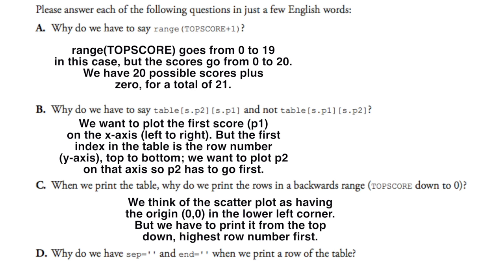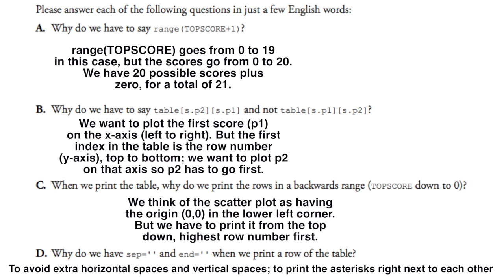And finally, part D: Why do we have sep and end when we print the row of the table? And this is, like I said before, to avoid extra horizontal spaces and vertical spaces, to print the asterisks right next to each other. Otherwise it'll skew everything off and it won't look correct.